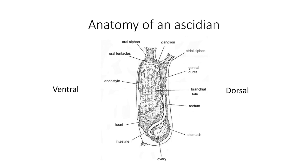When we talk about the dorsal side and ventral side of an Ascidian, the dorsal side is where the atrial siphon is — that side of the animal — going all the way down to the stomach and ovaries. The ventral side is the opposite side, where the endostyle would be. The endostyle is an organ that produces the mucus net that helps capture food and nutrients inside of the animal.